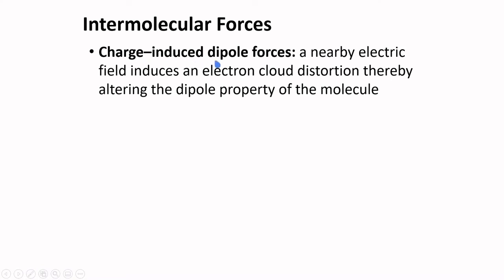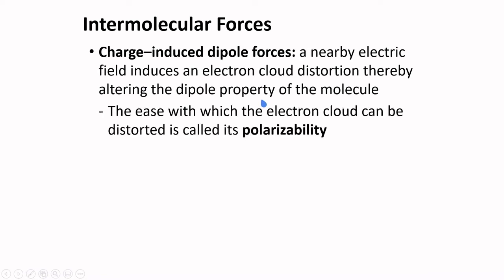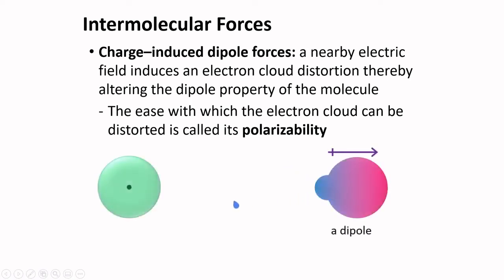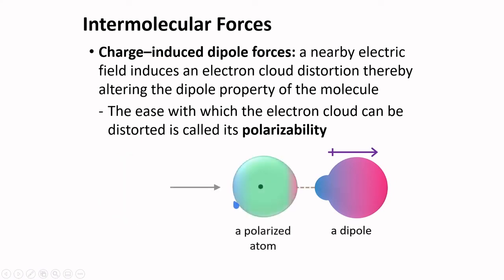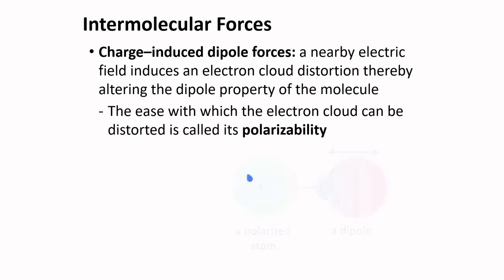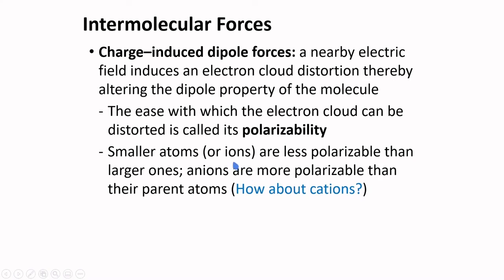In charge-induced dipole forces, a nearby electric field induces an electron cloud distortion, thereby altering the dipole property of the molecule. The ease with which the electron cloud can be distorted is called its polarizability. For example, in the presence of a dipole, a nonpolar substance can be polarized and induced to have a dipole property. Smaller atoms or ions are less polarizable than larger ones, and anions — being bigger — are more polarizable than their parent atoms.